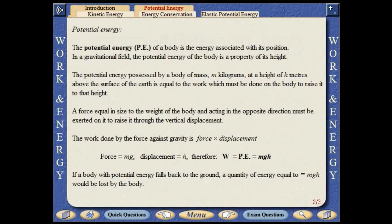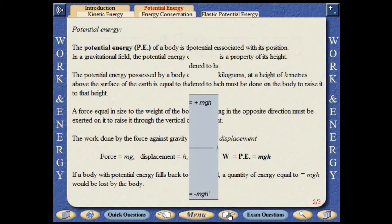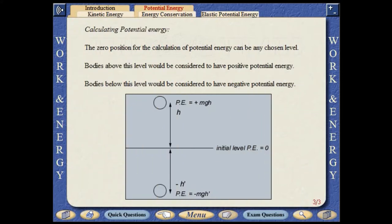The potential energy of a body is the energy associated with the position of the body. In a gravitational field, the potential energy of the body is a property of its height. The potential energy possessed by a body of mass m kilograms at a height of h metres above the surface of the Earth is equal to the work which must be done on the body to raise it to that height. A force equal in size to the weight of the body and acting in the opposite direction must be exerted on it to raise it through the vertical displacement. The work done by the force against gravity is the force multiplied by the displacement. If a body with potential energy falls back to the ground, a quantity of energy equal to mgh would be lost by the body. The zero position for the calculation of potential energy can be any chosen level. Bodies above this level would be considered to have positive potential energy. Bodies below this level would be considered to have negative potential energy.